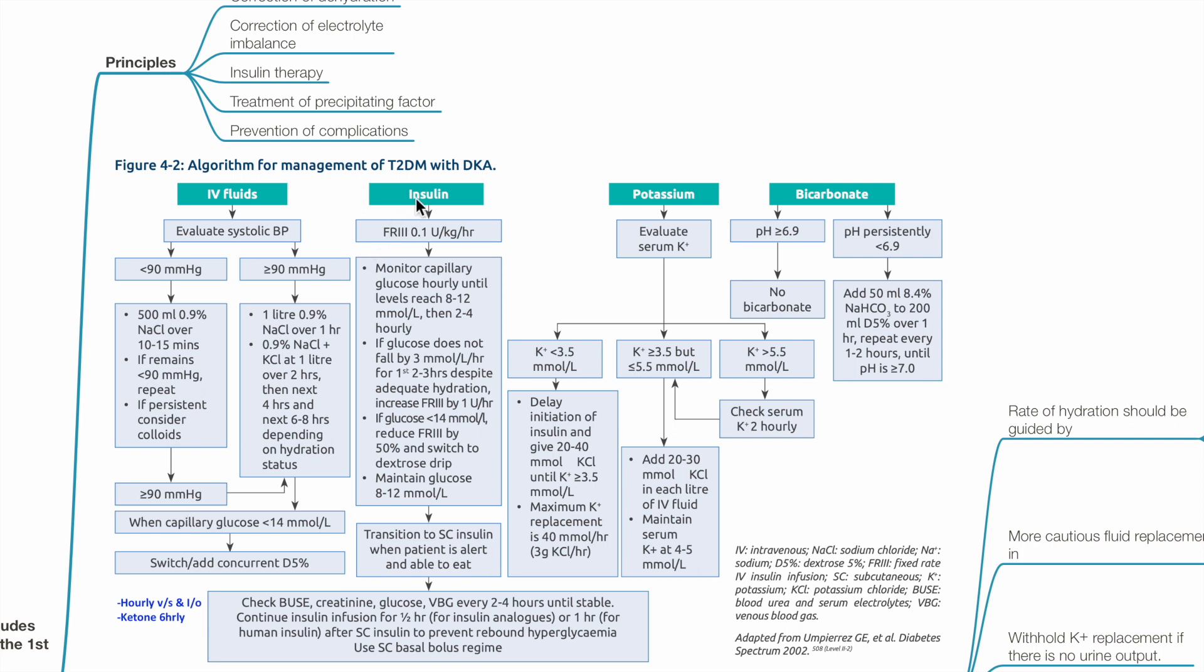Insulin therapy with fixed rate insulin infusion, 0.1 unit per kg per hour. Monitor capillary glucose hourly until levels reach 8-12 mmol per liter, then 2-4 hourly capillary blood glucose monitoring. If glucose does not fall by 3 mmol per liter per hour for first 2-3 hours despite adequate hydration, increase fixed rate insulin by 1 unit per hour, check infusion pump and IV lines.